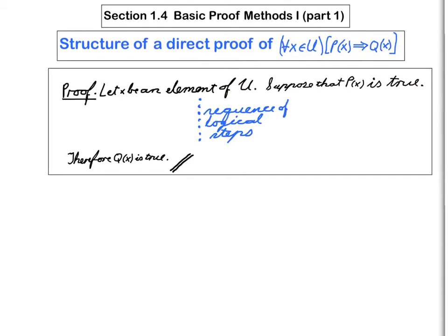And the very last sentence of the proof comes from the conclusion, which is, therefore, Q of x is true. And in order to link the second sentence with the last sentence of the proof, we have to come up with a certain sequence of logical steps. So that's the part that's perhaps a little bit more difficult.